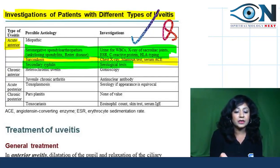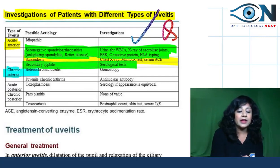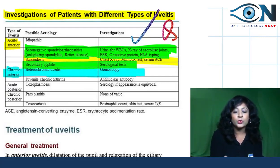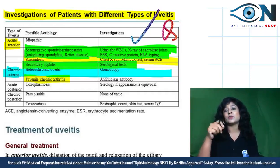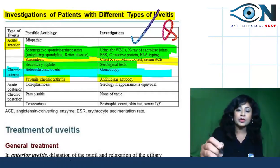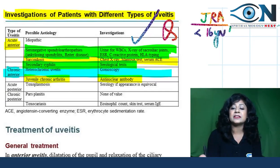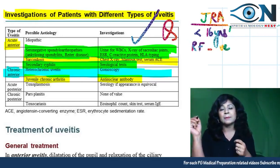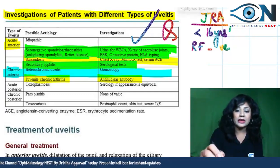For Fuchs heterochromic iridocyclitis, a type of chronic anterior uveitis, you perform gonioscopy. For juvenile chronic arthritis — if the patient is under 16 years of age — think of JCA or juvenile rheumatoid arthritis. Here, anti-nuclear antibodies are positive and rheumatoid factor is negative. For posterior uveitis: acute posterior includes toxoplasmosis, for which you do serological testing; pars planitis has no specific investigation.